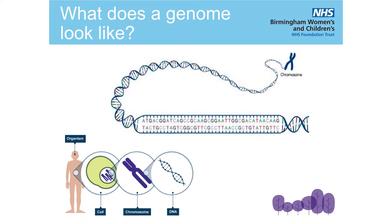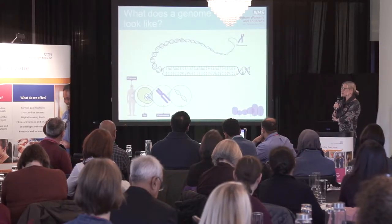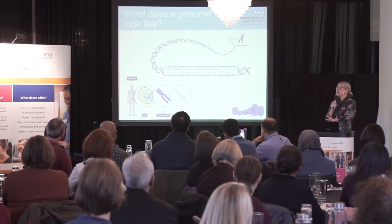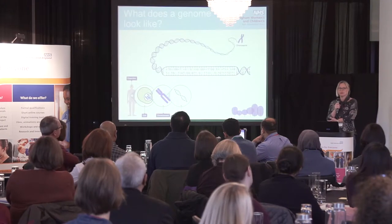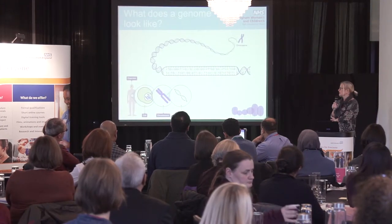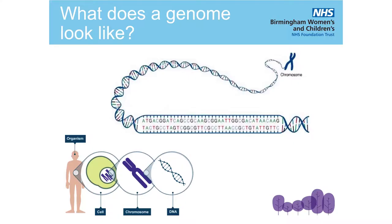These four nucleotides, together with a phosphate backbone, are packaged up into a structure familiar to all of you called a double helix. That double helix of DNA is further packaged up in a very specific and ordered way such that all six billion bases fit into every single cell in your body. They're packaged up into chromosomes, and you have 23 pairs of these in every single cell in your body.